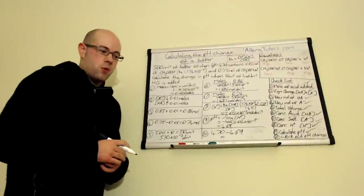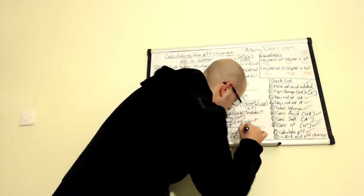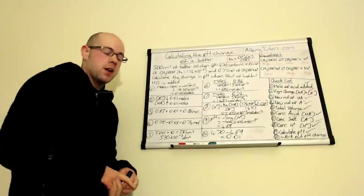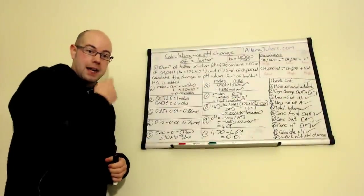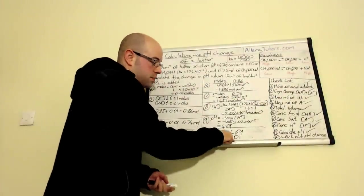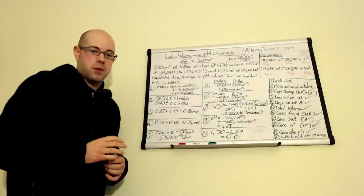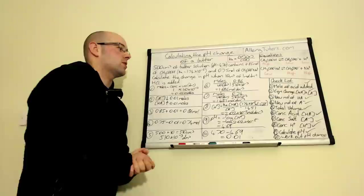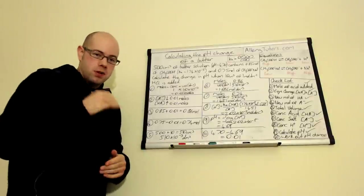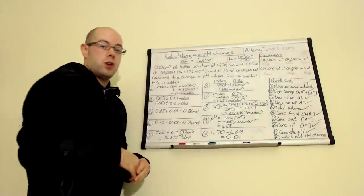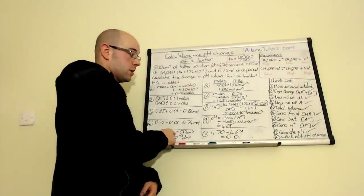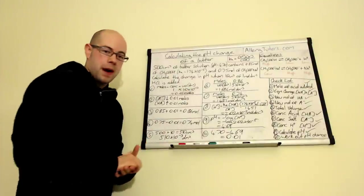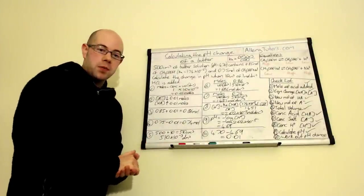A pH change of 0.01 is absolutely tiny — and that's exactly what you'd expect from a buffer. Even though you've added a fairly concentrated strong acid, the change in pH has been very, very small. That's what buffers do. It's a big calculation, so practice it a few times, follow the steps methodically, and make sure you understand how a buffer solution works — ultimately, all we were finding was the concentration of HA and A⁻ after adding the acid. I hope that helps. Bye.